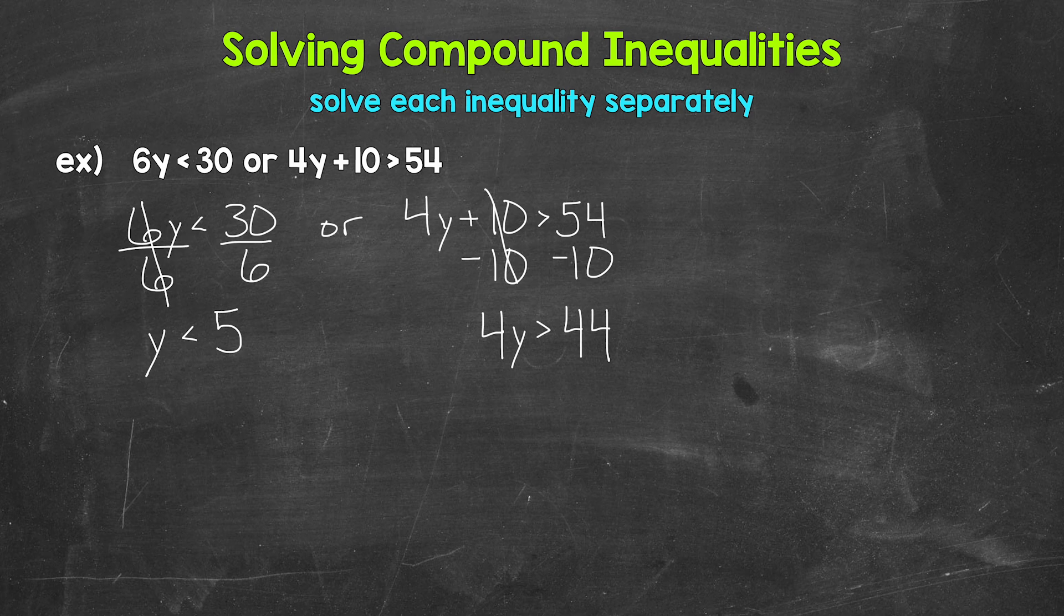So y is being multiplied by 4. We need the inverse operation of multiplication. That's division. So divide the left side by 4. We need to divide the right side by 4 as well. The 4s on the left cancel each other out. Y is now isolated. We have y is greater than, and then on the right, 44 divided by 4 gives us 11. So we have y is greater than 11.